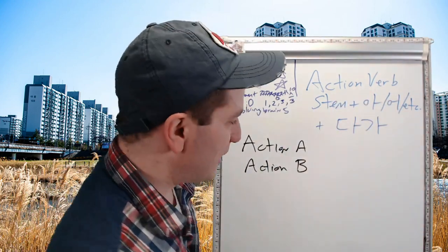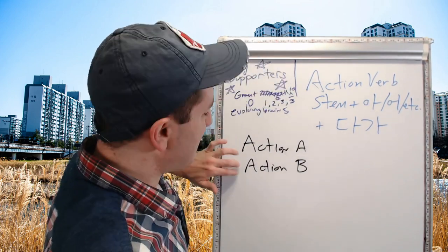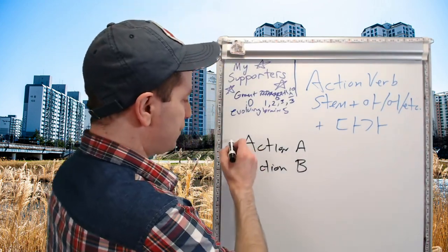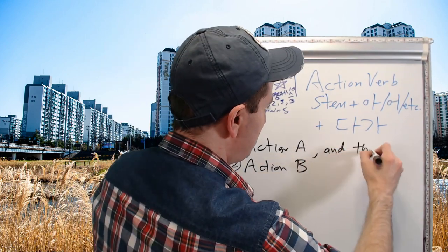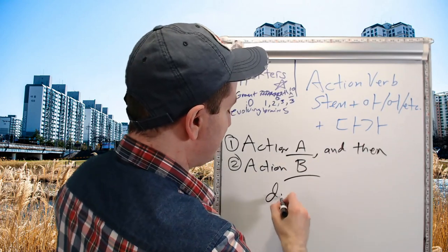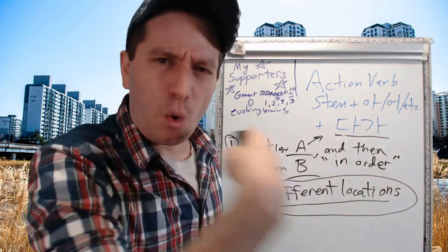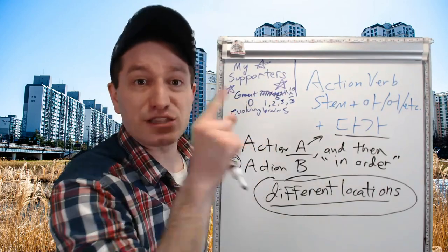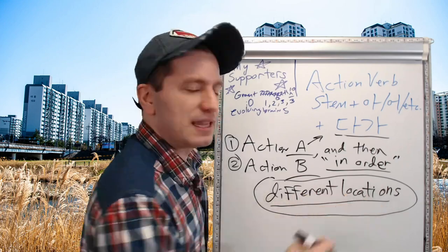This form is used to show that two actions are happening — action A and action B — and that action B happens after action A. First action A happens and then action B happens. This also shows that actions A and B happen at different locations. It shows the two actions are happening in order, with the feeling of A first, and then B, and by doing that, the usage implies they're in different locations.